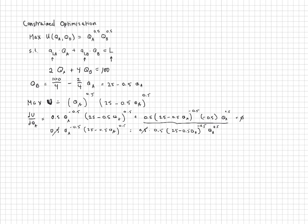You can see we can get rid of one of the 0.5s here. I'm going to cross multiply the ones with the negative exponents. And what I get then is 25 minus 0.5 QA is equal to 0.5 QA.